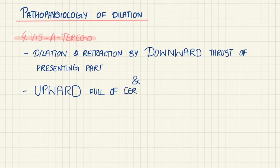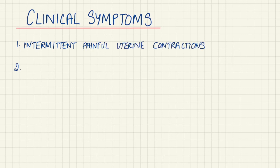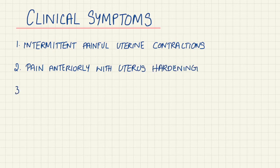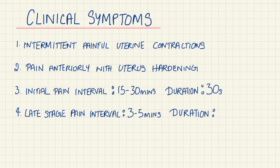Let's talk about clinical symptoms. There are intermittent painful uterine contractions, and the woman usually feels pain in the anterior front part of the thigh and lower abdomen. Initially, the pains are between 15 to 30 minutes with a duration of around 30 seconds. In late first stage, it decreases to three to five minutes with duration increased to 45 seconds.